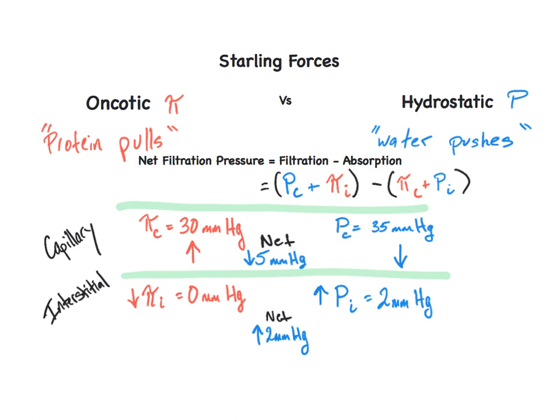This pushing force opposes fluid movement from the capillary, which brings the net movement within the system to be 3 millimeters of mercury, a filtration pressure directed from the intravascular space out into the interstitium.